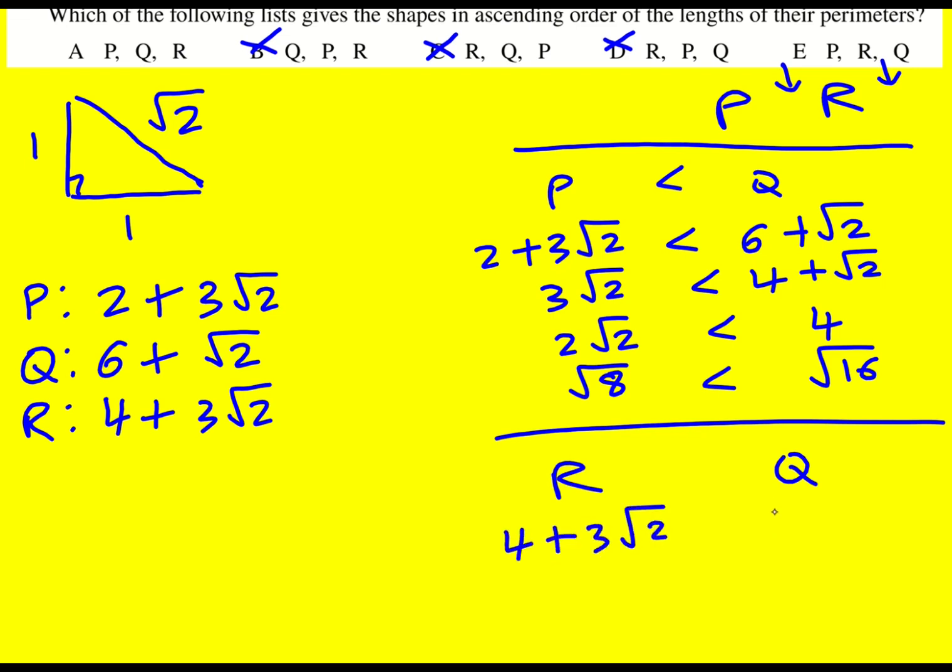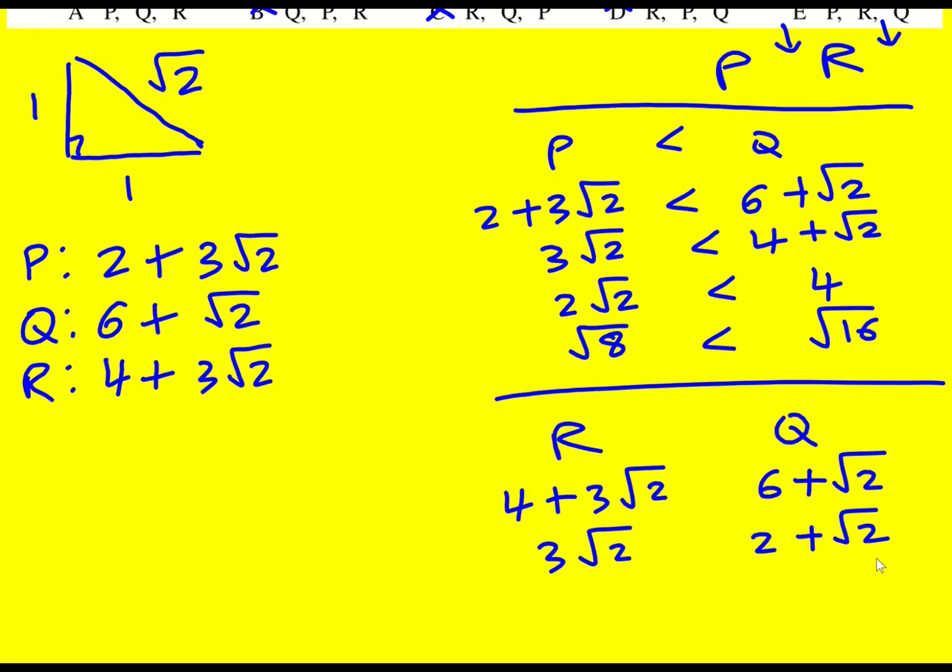4 + 3√2 with 6 + √2. So I'll take away four from both sides, 3√2 with 2 + √2. I'll take away √2 from both sides, so 2√2 with just 2. And I can see that R is going to be bigger because I got two lots of root two here.